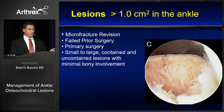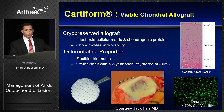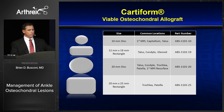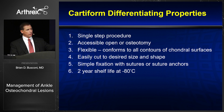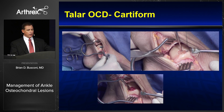For lesions greater than a centimeter, we have the option of Cardiform — a viable chondral allograft that we'll talk about later on. It comes in multiple sizes, is a single-step procedure, is very flexible, and can cover large defects by placing an allograft bone below and a cartilage matrix above. It is oftentimes associated with an osteotomy.